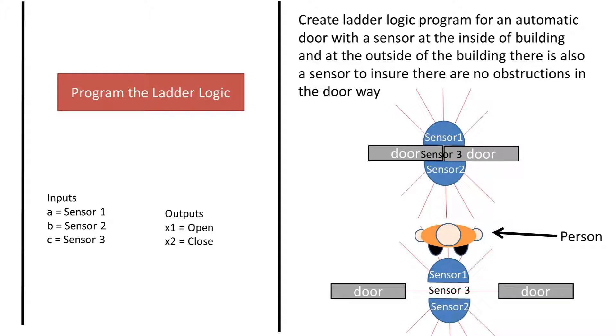building and a sensor on the outside of the building, along with a sensor in the doorway to ensure that there are no obstructions in the doorway. All sensors report a true or on signal when the person or obstruction is in the way. How do we go about making a ladder logic program for this situation?